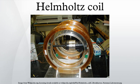A Helmholtz pair consists of two identical circular magnetic coils that are placed symmetrically along a common axis, one on each side of the experimental area, and separated by a distance equal to the radius of the coil. Each coil carries an equal electric current in the same direction. This configuration minimizes the non-uniformity of the field at the center of the coils.